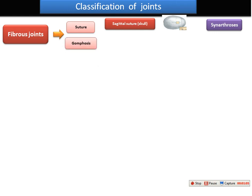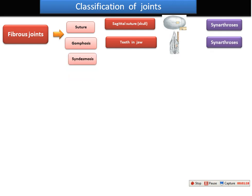The second fibrous joint we call gomphosis, and this is found in the teeth in the jaw, and this is also classified according to its motion into synarthrosis. Third, we have what we call syndesmosis, and this is found in the radio-ulnar joint as well as in the tibiofibular joint.